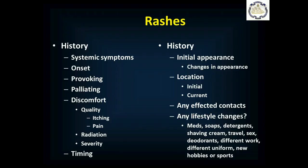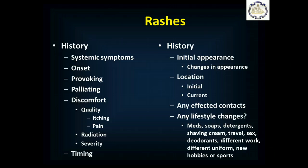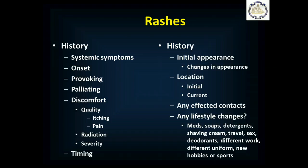When you see a patient with a rash, you need to obtain a rash history. It starts with: do you have any other symptoms? The systemic symptoms — fevers, chills, weight loss, loss of appetite, change of bowel habits, chest pain, shortness of breath, night sweats — anything else going on? Because that will help point you toward the decision of whether this is simply just a rash with local involvement, or if this is a sign of something more significant.